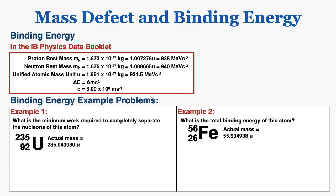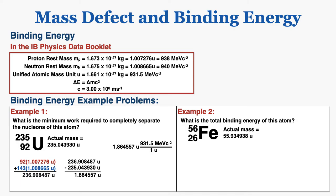Example one: what is the minimum work required to completely separate the nucleons of this atom? Minimum work required to separate nucleons is a code phrase for binding energy. To find it, I start by finding the mass defect: 92 protons and 143 neutrons give an expected mass, and subtracting the actual mass gives a mass defect of 1.864557u. Multiplying by 931.5 MeV per c squared per u and then applying E equals mc squared gives 1737 mega electron volts — the minimum work required.